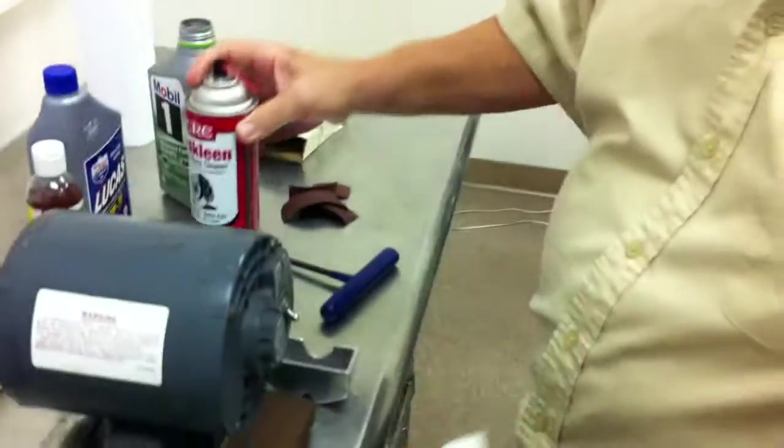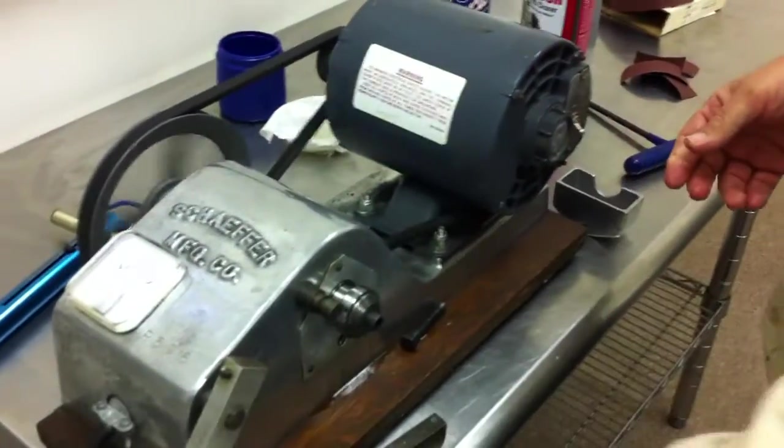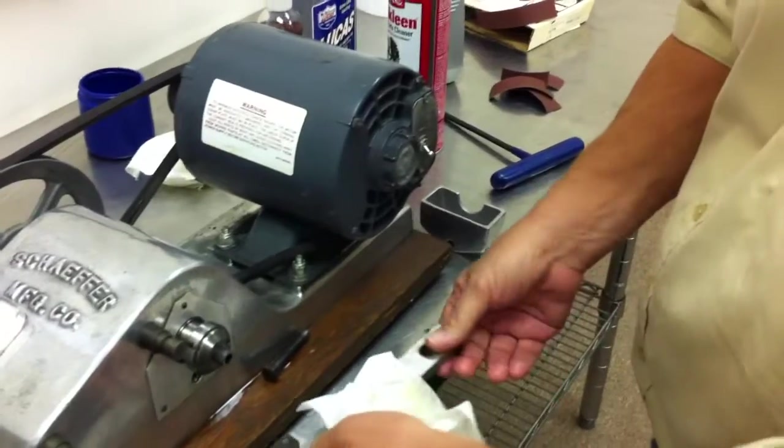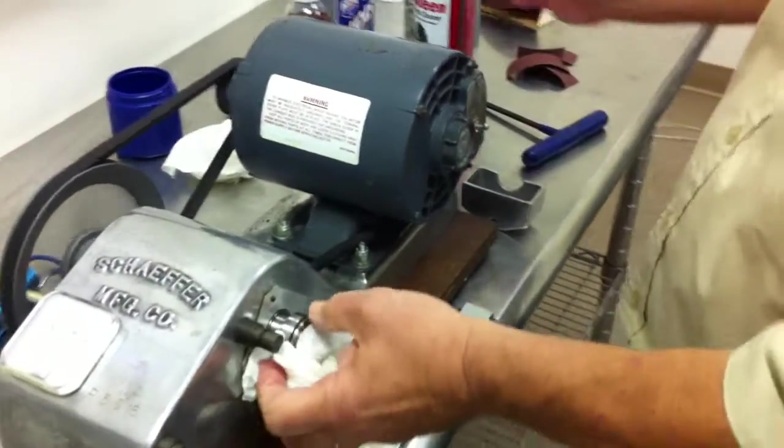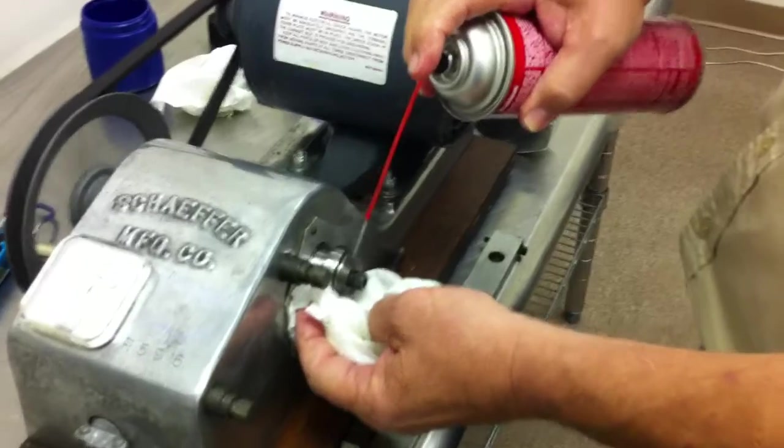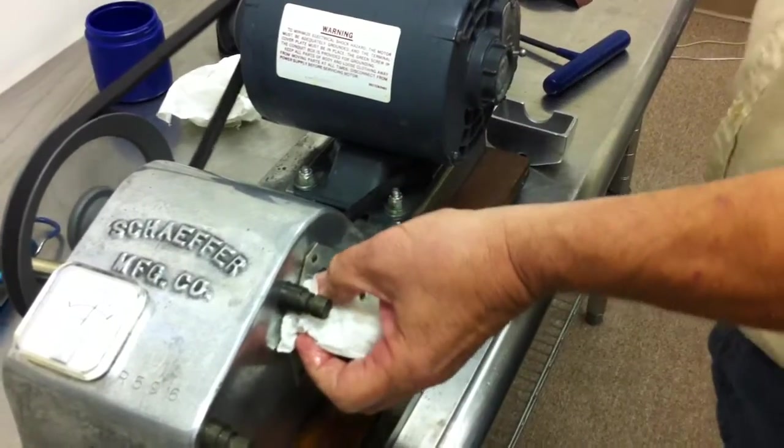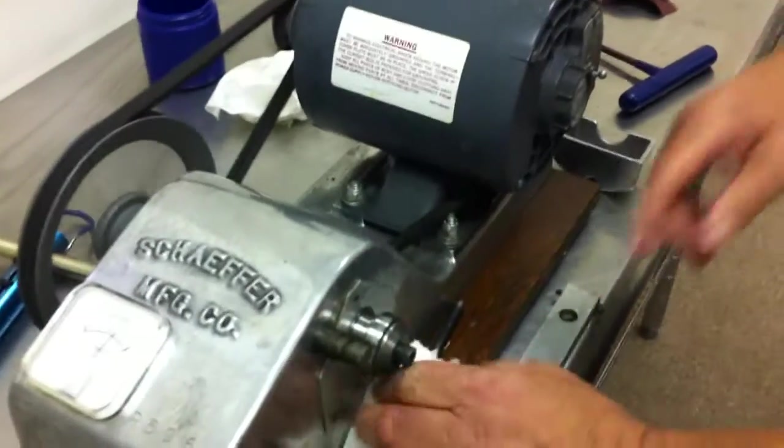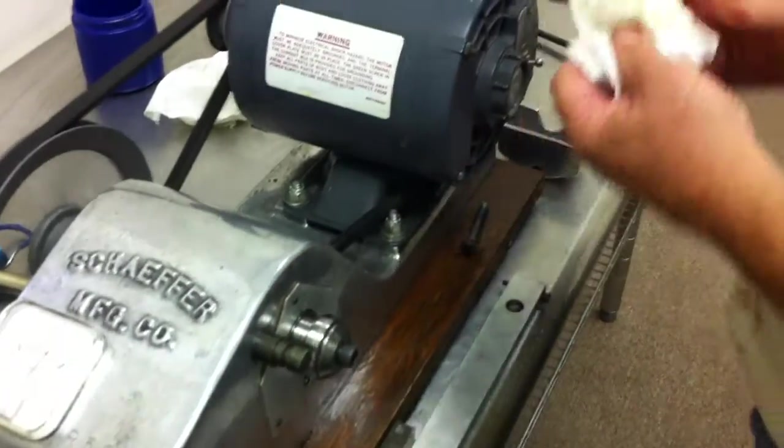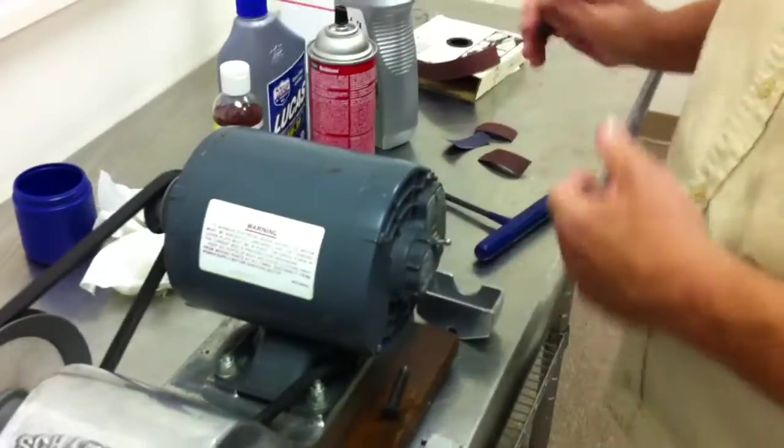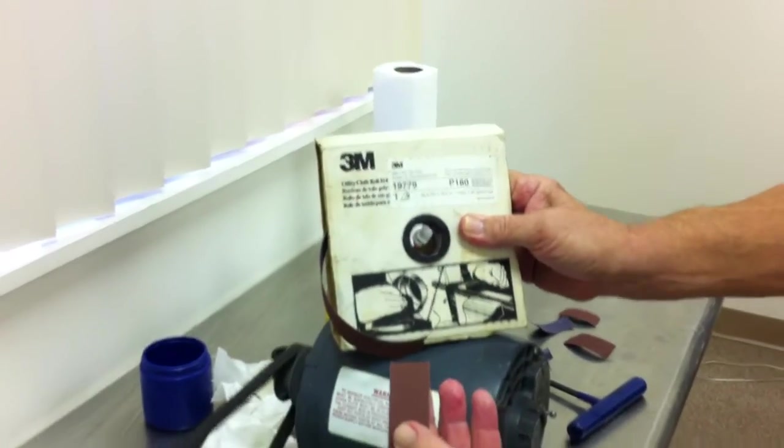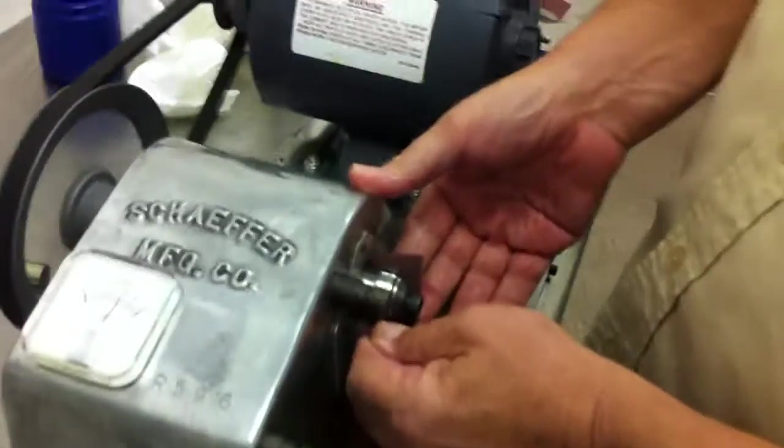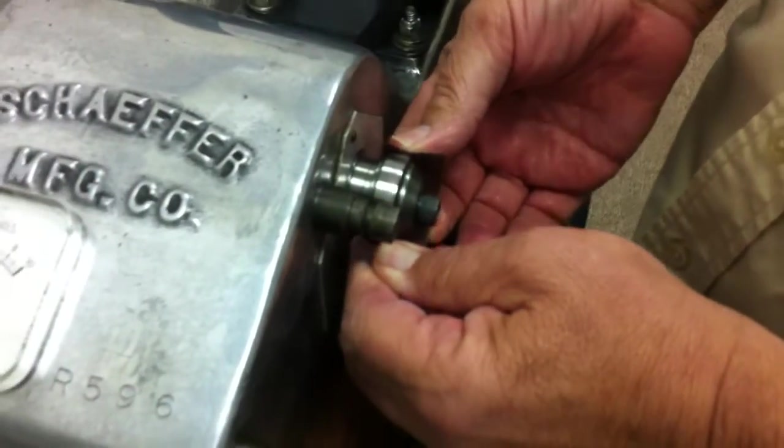We're going to spray some of the brake cleaner on here too, to get the oil residue off. And we're just going to take some standard 3M emery cloth and dress this race up to get that transferred metal off of it.